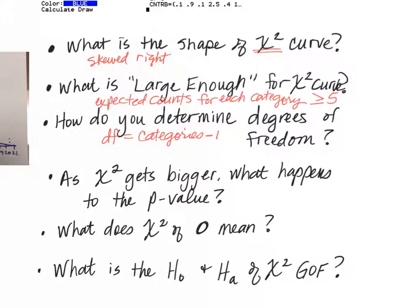For example, yesterday, even though you all had different sample sizes because you all had different amounts of M&Ms in your cup, if this was a mean problem, I would have had to graph your data all on different curves. However, since we were doing a chi-squared test, you all had the same curve because even though you had different N's, you all had the same degrees of freedom — the six colors minus one.